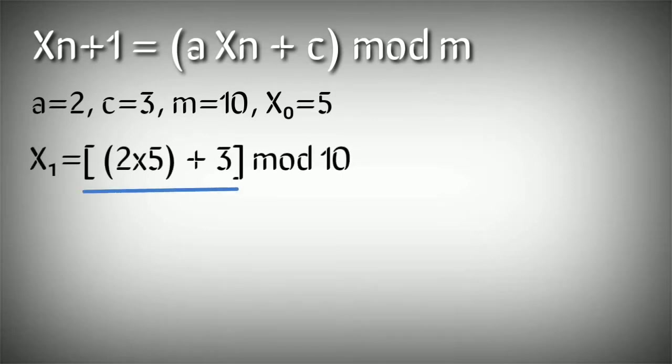Now 5 times 2 is 10, 10 plus 3 is 13 and we have to divide 13 by 10 and we have to see the remainder. So when we divide 13 by 10, we get the remainder of 3. So that's our X₁.